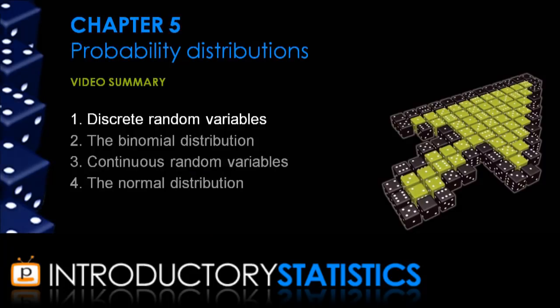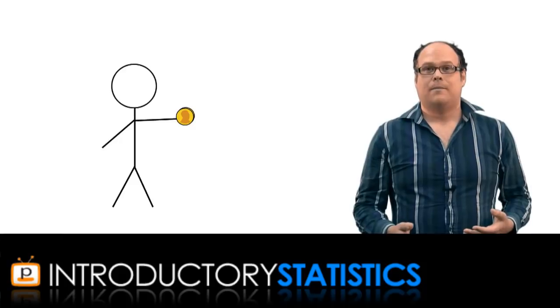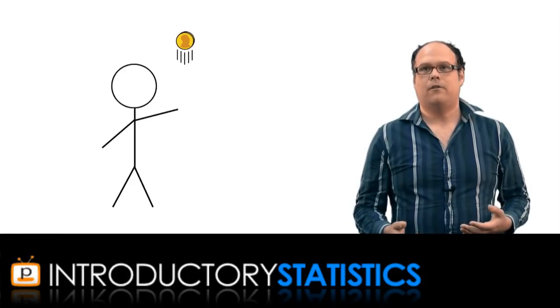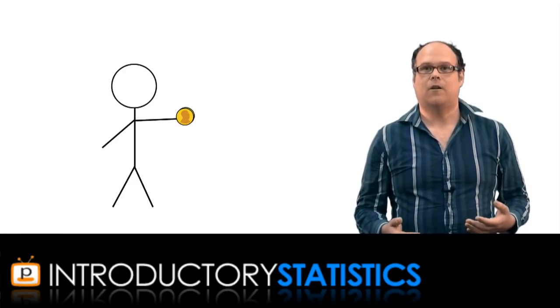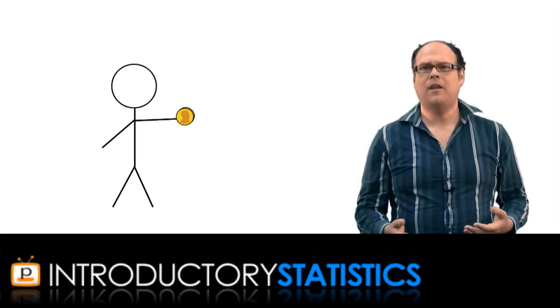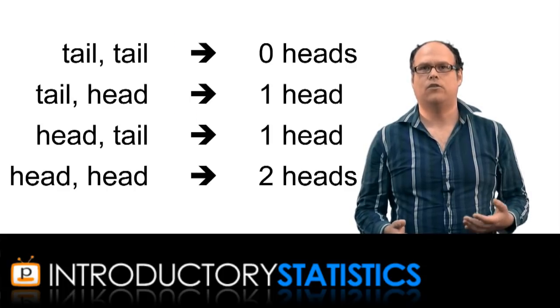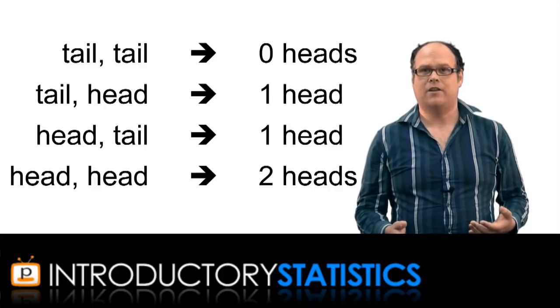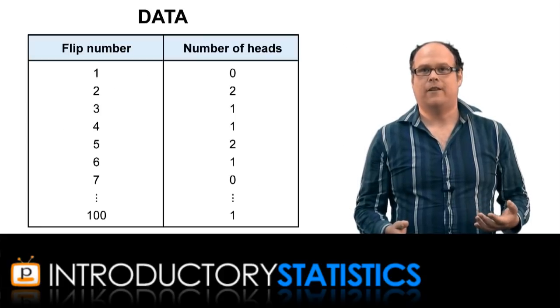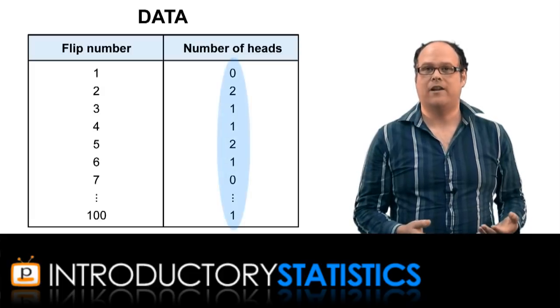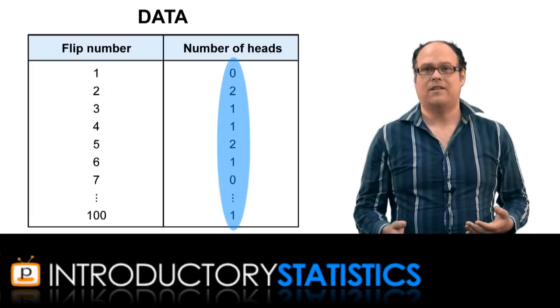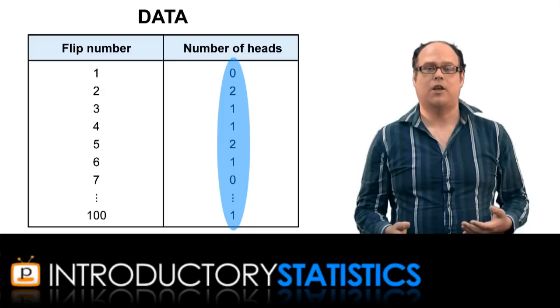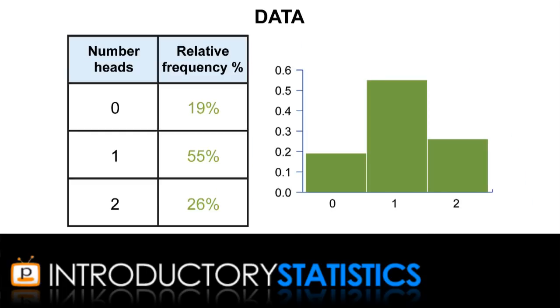So to begin our look at probability distributions, we start by defining a random variable. They're probably best explained with an example. Suppose you have a coin, and you want to flip the coin twice and count the number of heads that show up when you do that. There'll be either 0, 1, or 2 heads. Now, you could treat this as a data situation. You could do this double coin flip 100 times, for example, and then you would have 100 data values. You could even then start describing that data by showing a relative frequency table or a histogram.